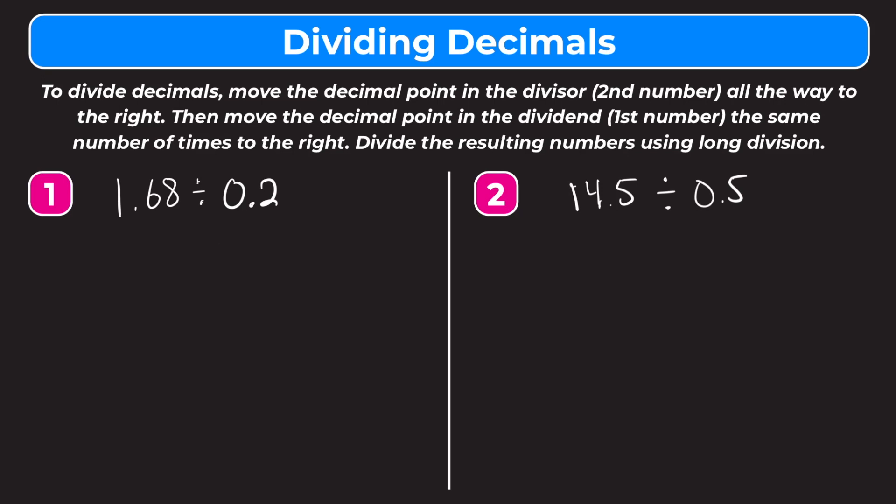Obviously when working with decimals it's not a whole number, so we have to change it. We do this by moving the decimal point all the way to the right in our divisor. But in order to be allowed to do this we also have to move the decimal point in our dividend, the number under the bar, the same amount of spaces.